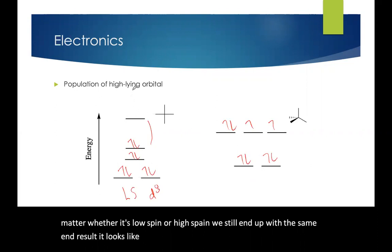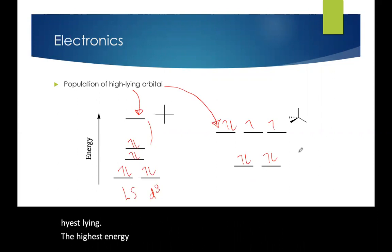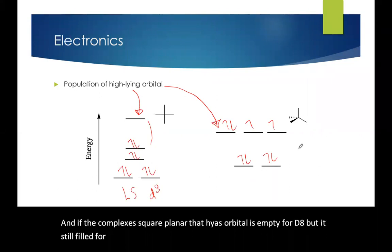The difference here is what's happening in the highest lying orbital, the highest energy orbital. And if the complex is square planar, that highest orbital is empty for d8, but it's still filled for anything above d4, actually, for tetrahedral.